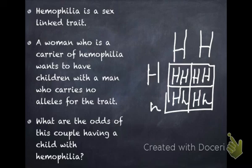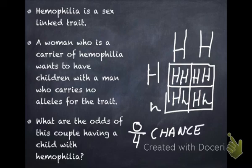If we worked it out wrong — without using the modified sex-linked Punnett square — we'd end up with a 0 out of 4 chance of kids with hemophilia. But that's not the right answer. The correct answer is 1 out of 4: these people have a 1 in 4 chance of having a child with hemophilia. I hope that clears up the difference between working out a sex-linked trait versus a normal Mendelian gene.